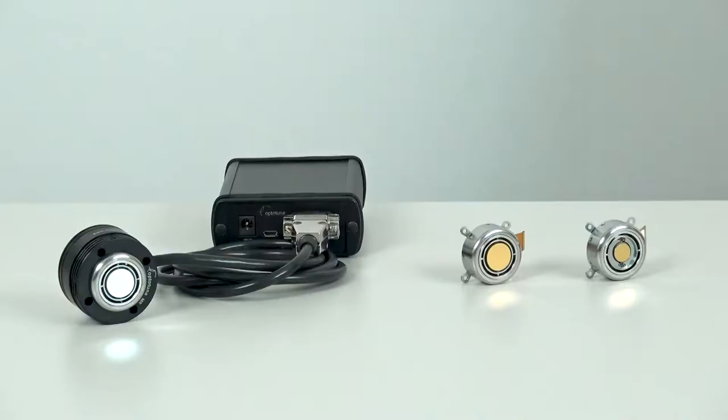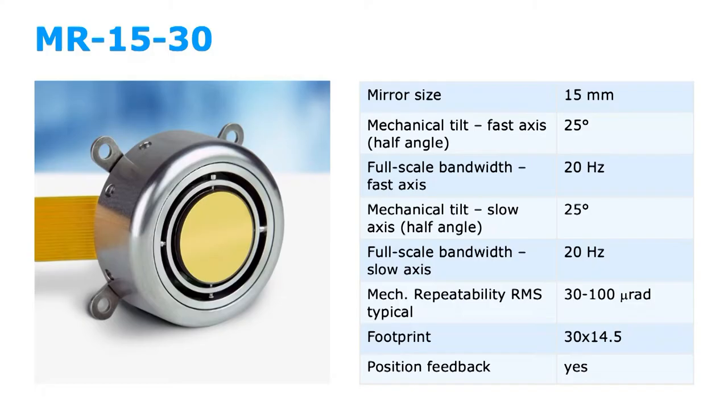Now we come to the products. On the mirror side, we have the MR1530 with 15 mm mirror size and plus minus 25 degrees mechanical tilt in both axes. The mirror can thus cover a total field of view of 100 degrees.